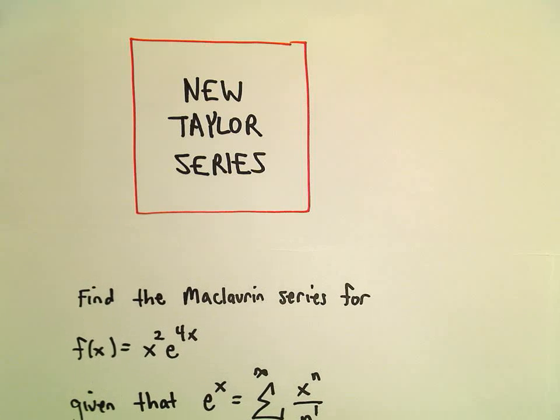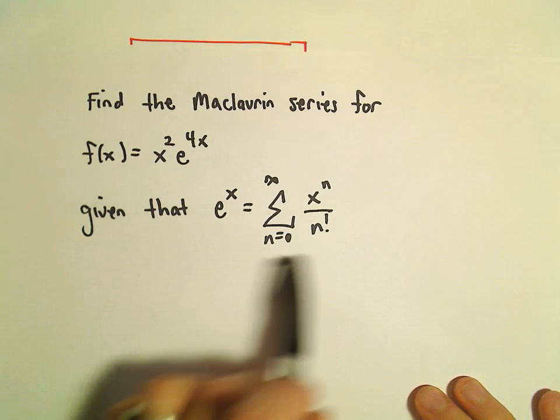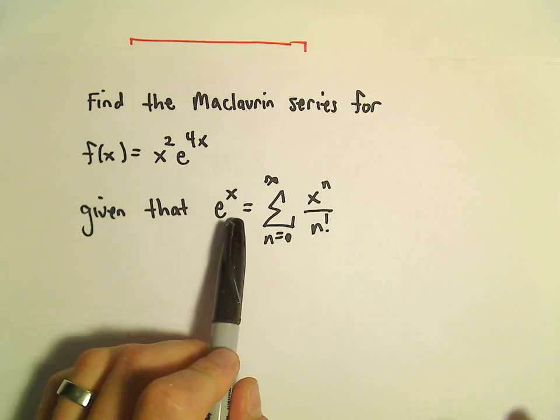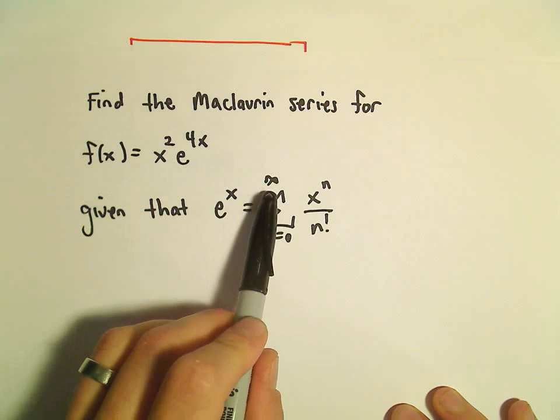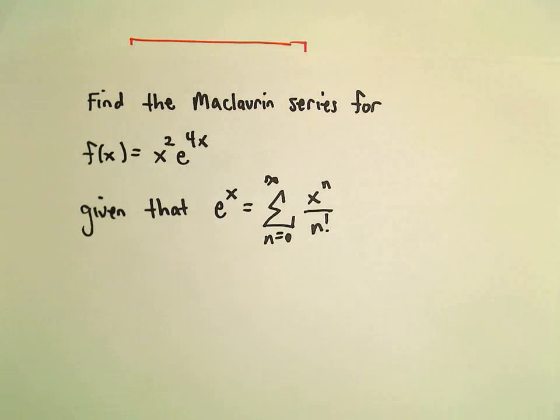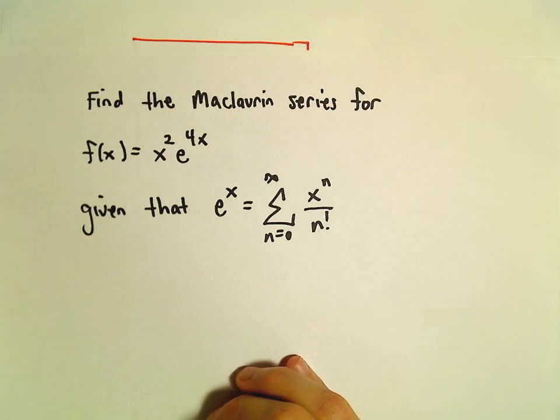Alright, so just another example here of finding a series expansion given a known series expansion. The series expansion for e to the x in the Maclaurin series is from n equals 0 to infinity, x to the n over n factorial. We're going to find an expansion for the function x squared times e to the 4x.